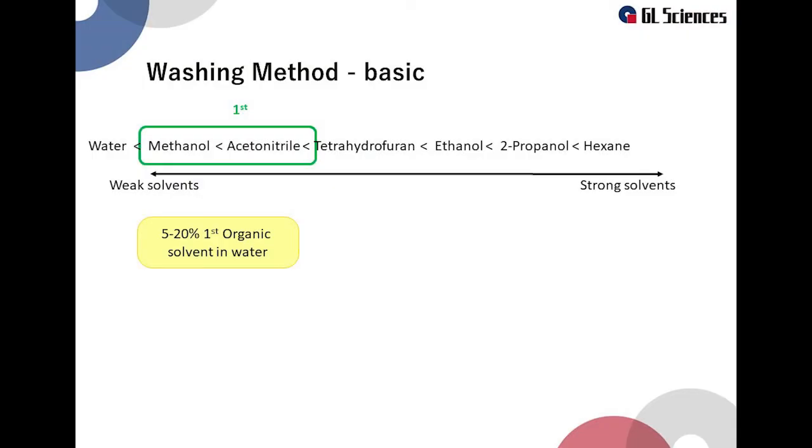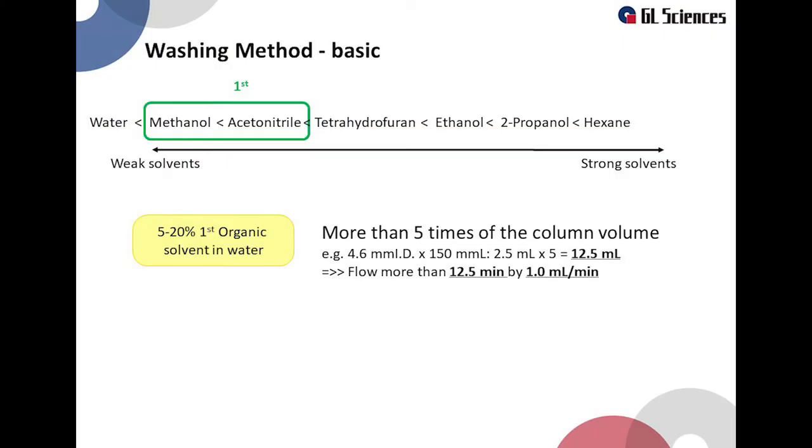First of all, create a mixture of 5-20% of the first choice detergents with water. Run this solvent through the column. The reason for flushing under water-rich conditions is to remove precipitated substances, such as salts, remaining on the column. The volume to use is more than 5 times the column volume. When washing at a flow rate of 1.0 ml per minute, running time must be at least 12.5 minutes.